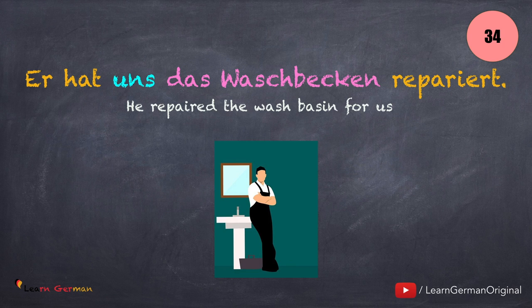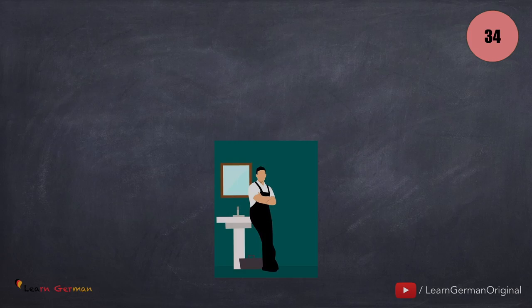Now let's look at the next sentence: Er hat uns das Waschbecken repariert. Das Verb reparieren kann man auch ohne Dativobjekt benutzen. Jemandem etwas reparieren.